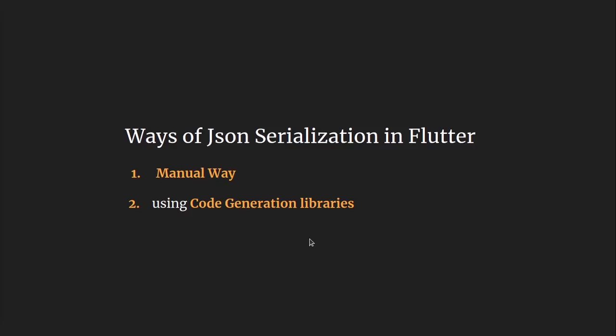In Flutter, there are two ways to perform JSON serialization. The first one is a manual way where you have to write all the logic by yourself, and another is by using code generation libraries. Being a beginner, which method should I prefer and what are the major differences? It really doesn't matter whether you are a beginner or not — it depends upon your project type. If your project is very simple and does not use a complex JSON structure, the manual way is suggested. It's easy to understand and avoids boilerplate code. But if your project heavily depends upon REST API calls with complex and nested JSON structures, then code generation will ease your serialization process. You just have to write a few lines of code and it will do all the heavy lifting.